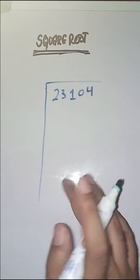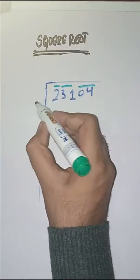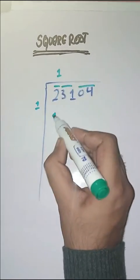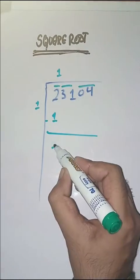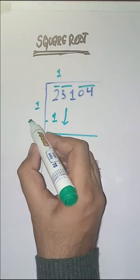from right to left like this. So first we have to solve 2. We start with 1. 1 times 1 is 1 minus, we get 1. Next pair is 31, we'll bring it down. Now we do 1 plus 1 which is equal to 2.